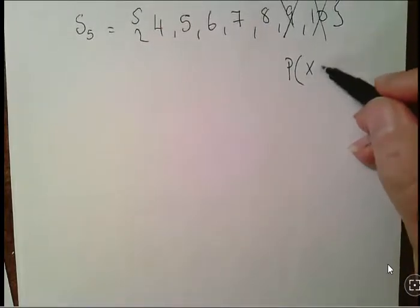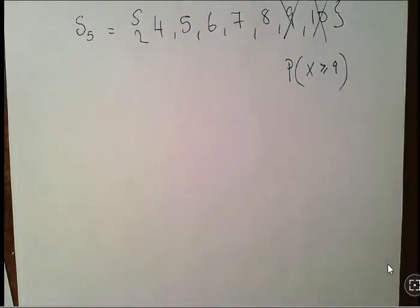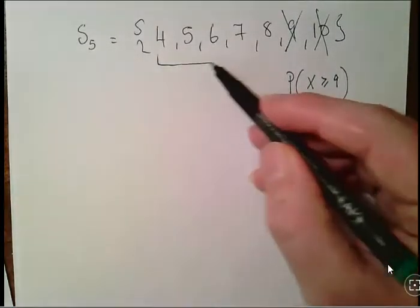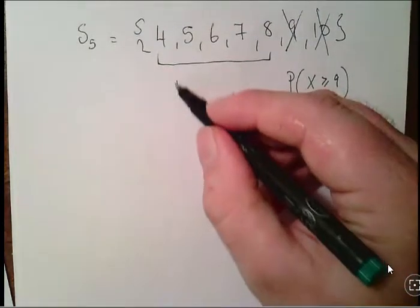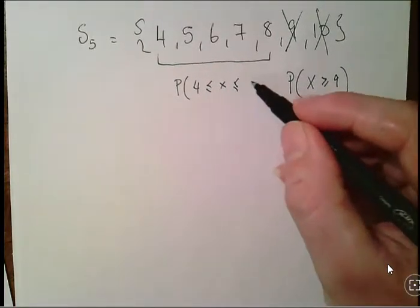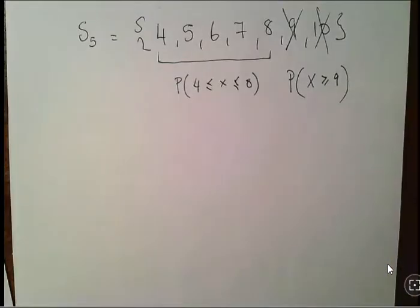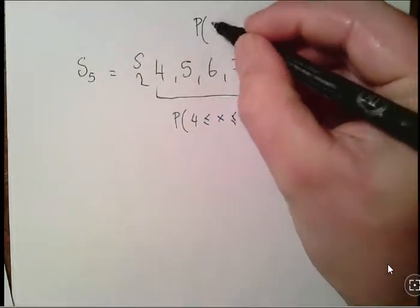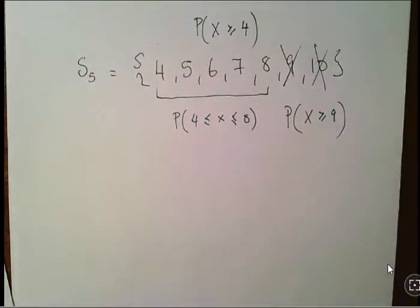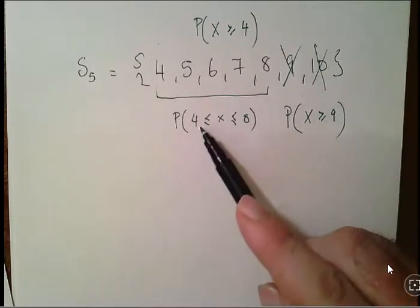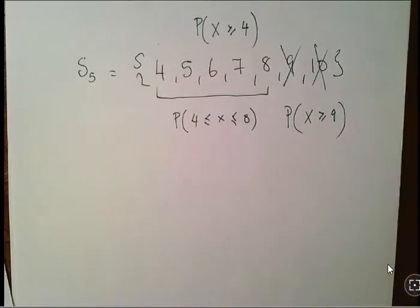But what happens when we remove 9 and 10? What we have left here is the probability of X between 4 and 8. All together, what we have is the probability of X greater than or equal to 4 in terms of sample points. It can be broken up as X between 4 and 8 inclusive plus the probability of X greater than or equal to 9.